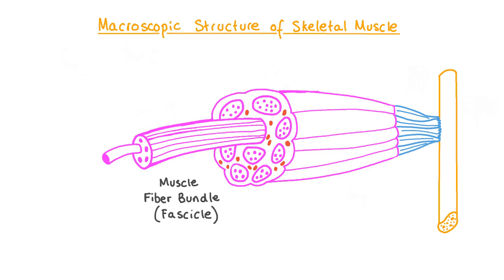Skeletal muscle consists of many bundles of muscle fibers which are sometimes called fascicles. These muscle fibers contain a collection of tissues, cells, and organelles. Depending on its size, one muscle may be made up of up to thousands of individual muscle fibers. Each bundle of fibers is surrounded by a protective layer of connective tissue called the perimysium. The prefix peri, like perimeter, means that it's surrounding something, while the myo in the middle of the word refers to muscle. The perimysium helps the cells to withstand the pressure of muscle contraction and provides a place for blood and nervous tissue to connect to the individual muscle fibers.